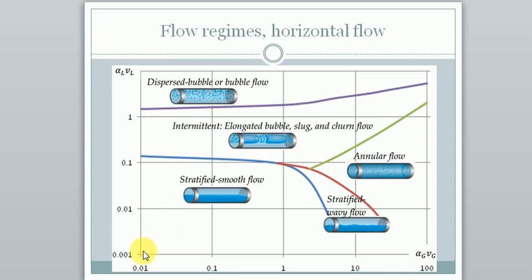If we have none of those, if everything is at rest, then clearly we have stratified flow. The liquid will be at the bottom and the gas will stay at the top.